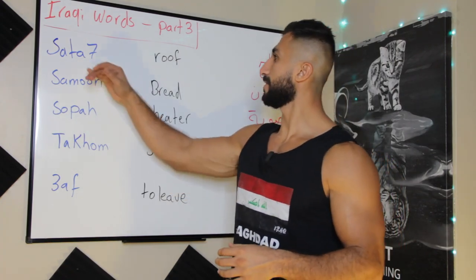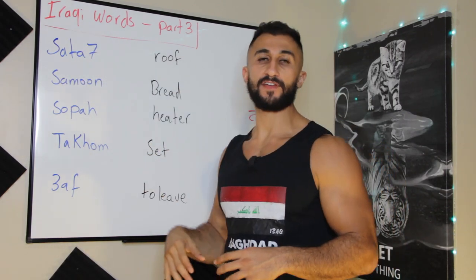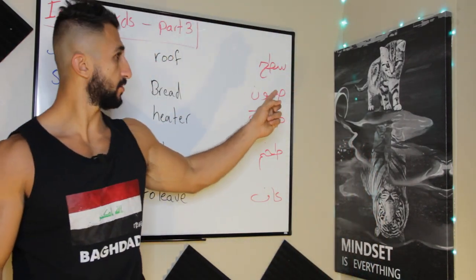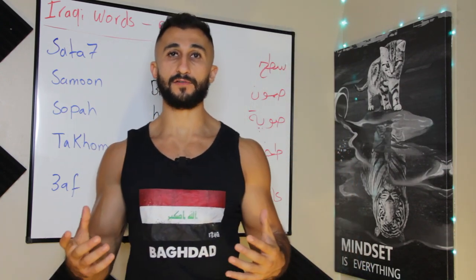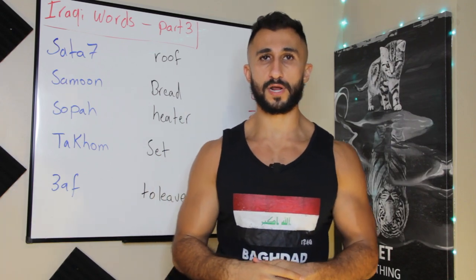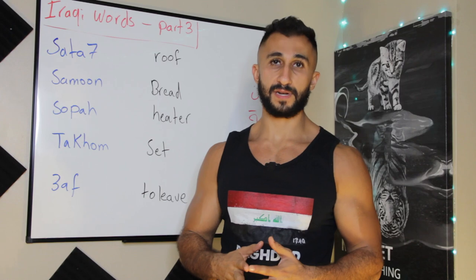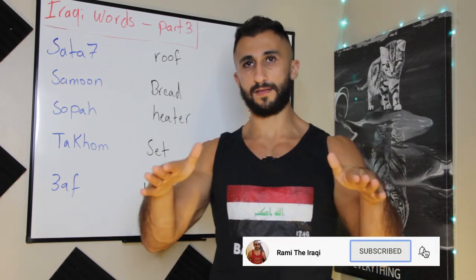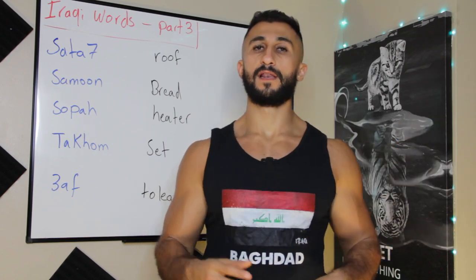Now the next set of words. We have 'satah' — note this is a 'tah,' and the letter seven here is the letter 'ha' in Arabic. Satah means roof. In Iraq and many Middle Eastern countries, houses have flat roofs you can walk on, unlike in places with snow where roofs are sloped. For example: 'Rami, imshi nusad lissatah' — Rami, let's go up to the roof.